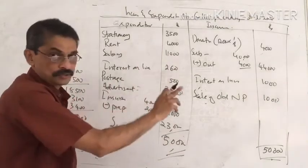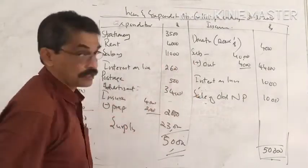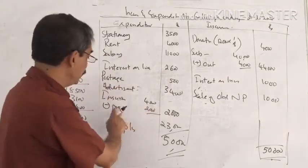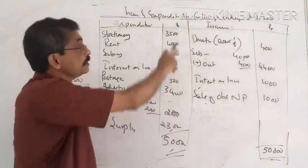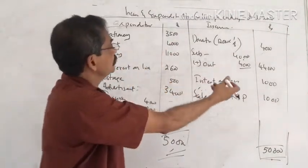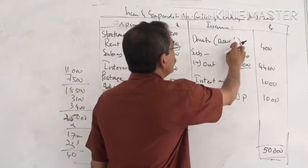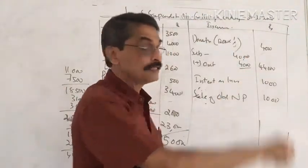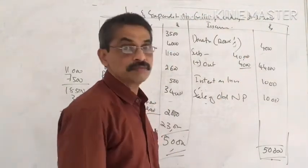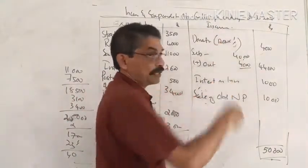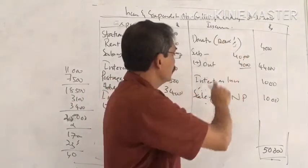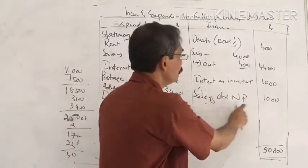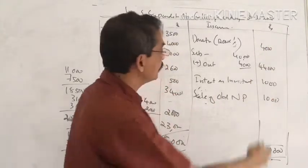On the expenditure side: postage is transferred at Rs. 500, advertisements at Rs. 3,400. For insurance, since 6 months were paid in advance, only the relevant portion is charged — less than Rs. 4,000. The donation: one-third goes to income, and two-thirds to the balance sheet. For subscriptions, adding the outstanding adjustment of Rs. 4,000 gives a total of Rs. 45,000. Interest on investment is Rs. 1,000 and sale of old newspaper is Rs. 1,000.